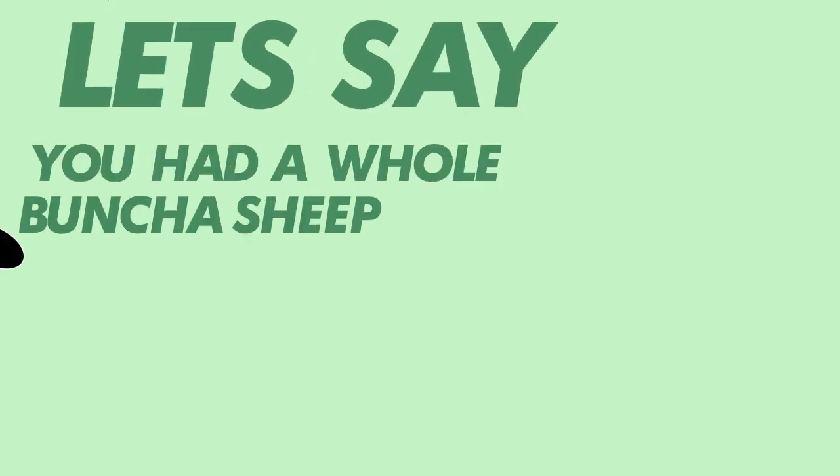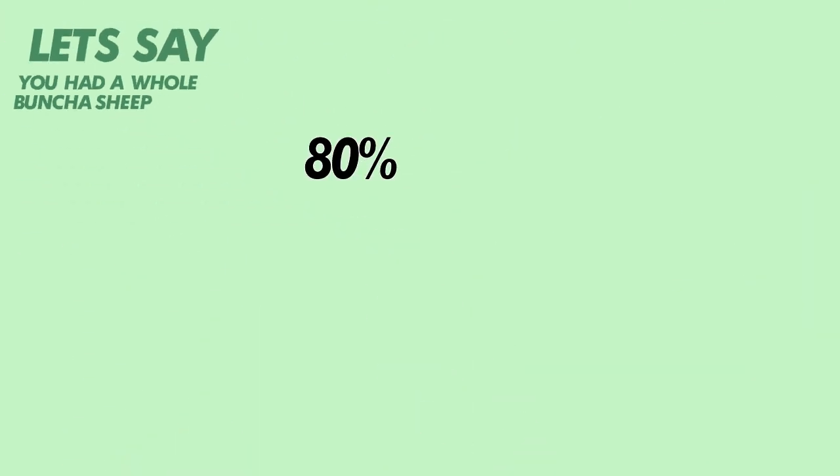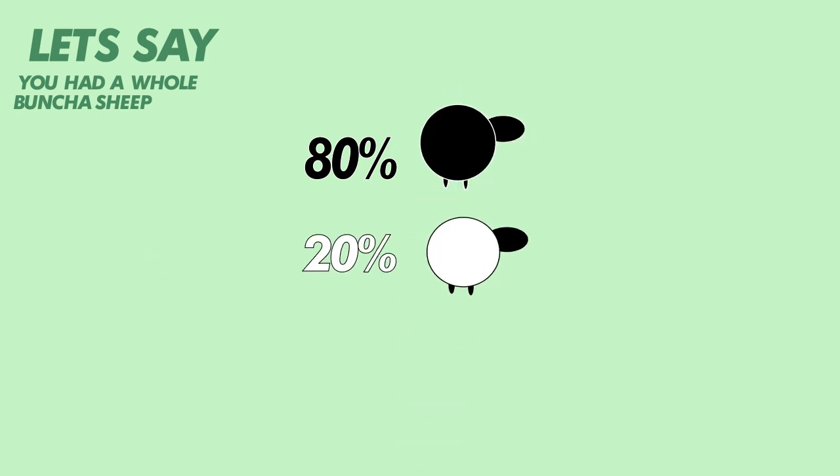Let's say you had a whole bunch of sheep. 80% of them are black, 20% are white, with white being the homozygous recessive trait.